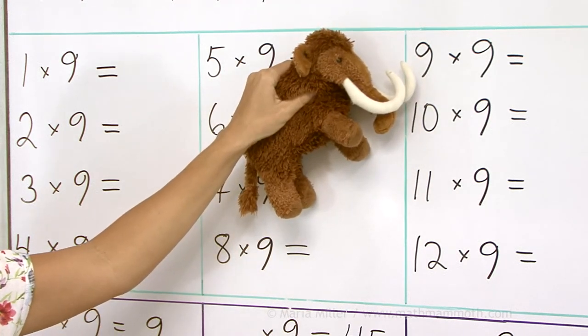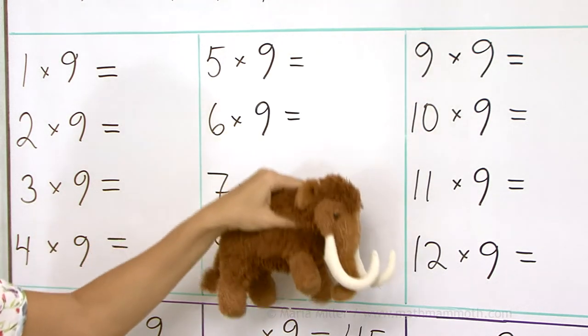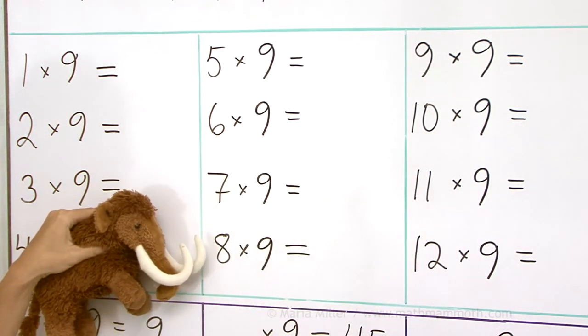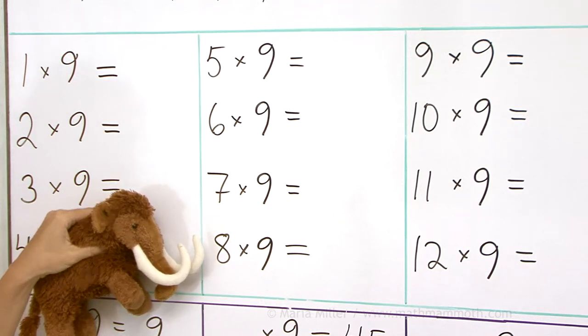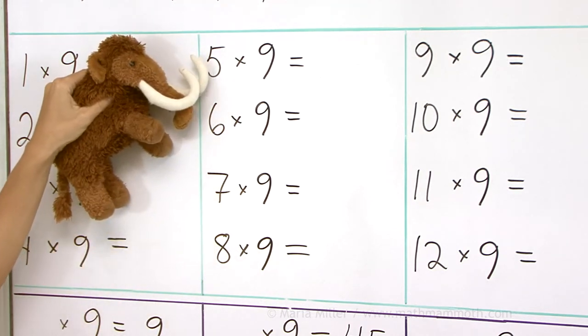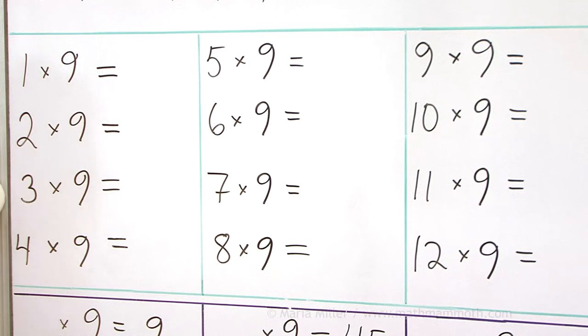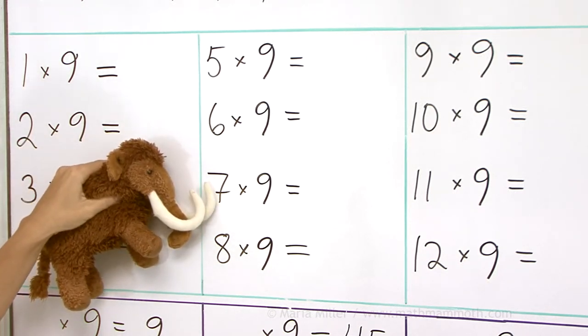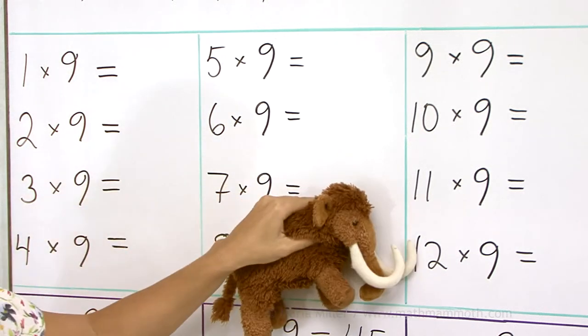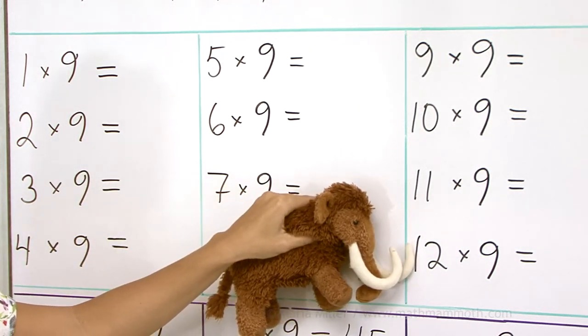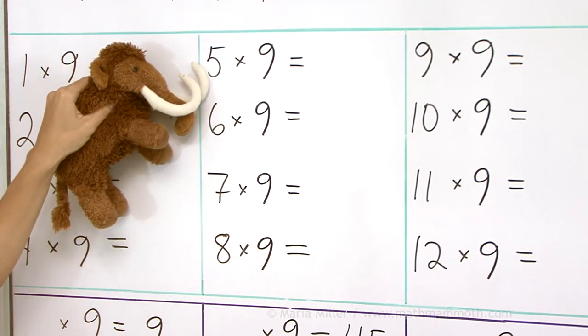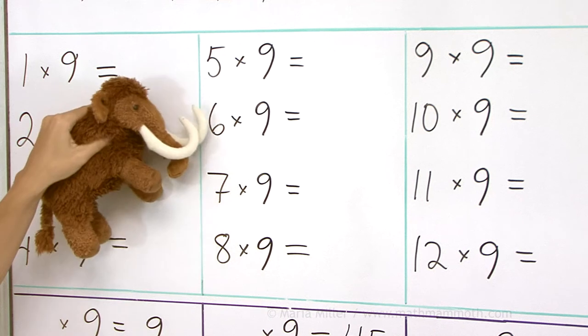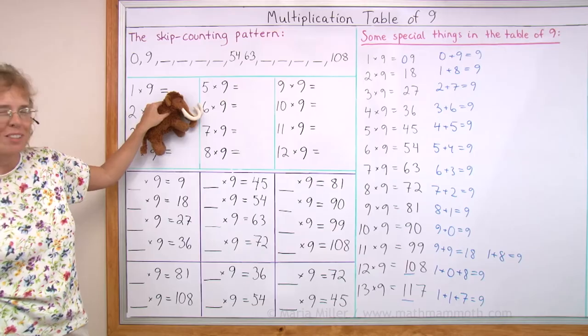9 times 9. 12 times 9. 8 times 9. 5 times 9. 3 times 9. 7 times 9. 12 times 9. 5 times 9. 8 times 9. 6 times 9. Alright, good job.